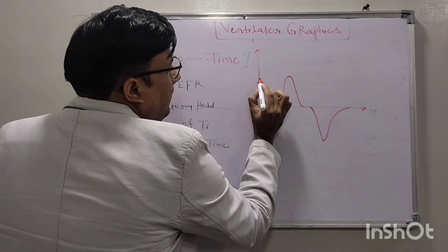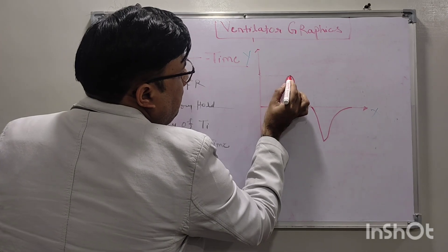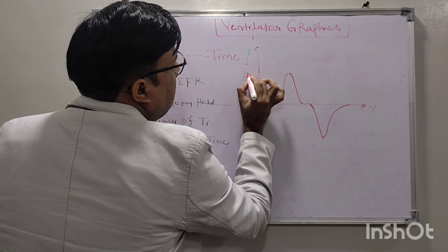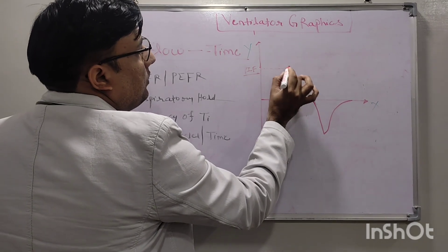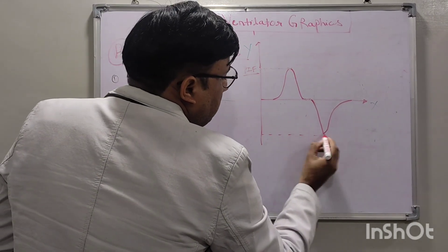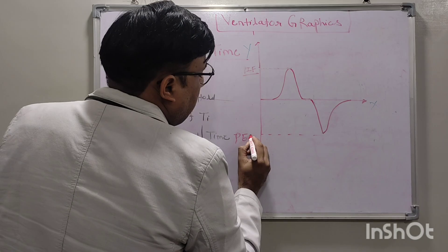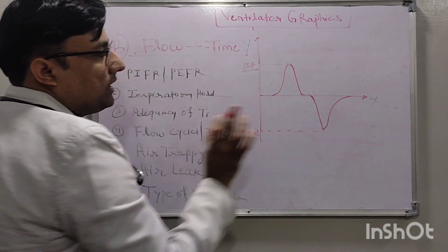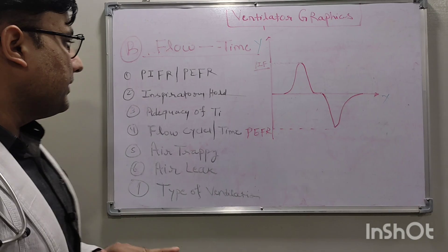For peak inspiratory flow rate, we can see this on the y-axis. This is the peak inspiratory flow rate. On the negative side, this is the peak expiratory flow rate. Both peak inspiratory flow rate and peak expiratory flow rate can be seen in this graphic.